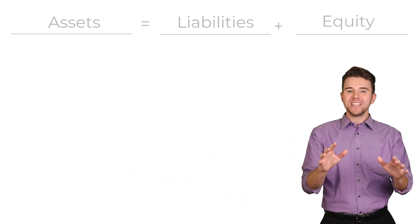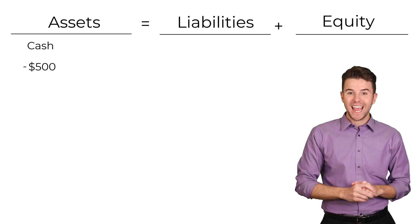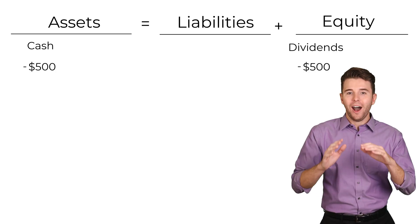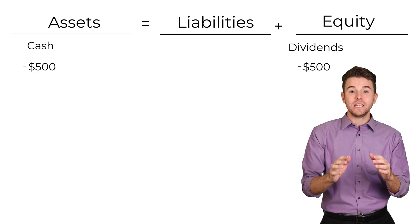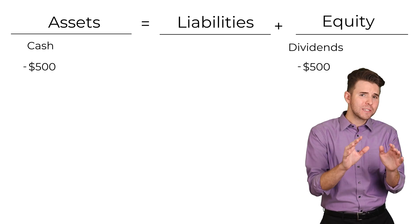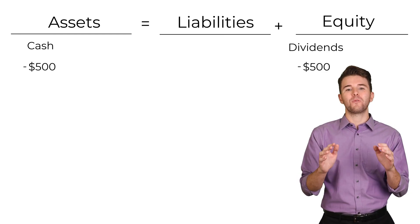Last, we want to take $500 cash out of the business for personal use. Using the accounting equation, we decrease assets by $500 and decrease equity by $500. Under equity, this decrease is recorded in dividends, which are not expenses because they do not help earn revenue.